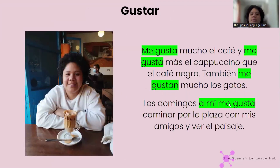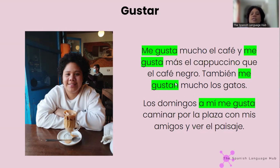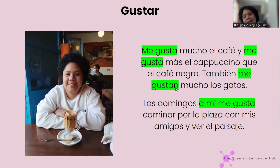Me gusta mucho el café, y me gusta más el cappuccino que el café negro. También me gustan mucho los gatos. I like coffee a lot; I like cappuccino more than black coffee; I also like cats a lot. You can see I use gusta because coffee and cappuccino are singular words, and gustan because I'm talking about cats, which is plural.